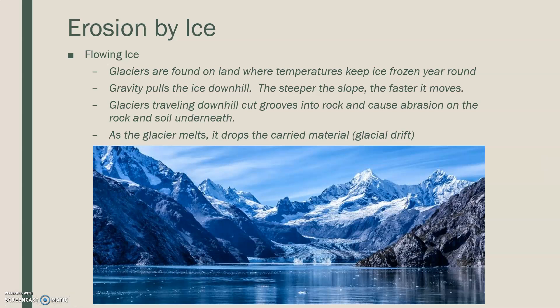Erosion by ice — flowing ice is often found in the extreme north and extreme south parts of the globe, near the poles, in the form of glaciers. While you may not think a glacier is moving, it actually moves all the time. Glaciers are found on land where temperatures are frozen year-round, under 32 degrees, and gravity is pulling that ice down the hill. The steeper the slope, the faster gravity pulls it — just like sledding or riding a bike downhill. Glaciers traveling downhill cut grooves into the rock and cause abrasion on the rock and soil underneath.